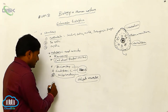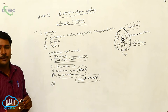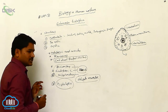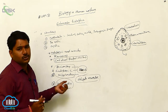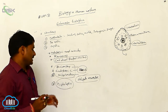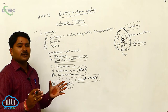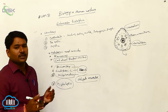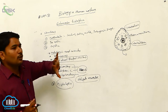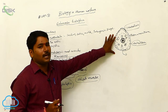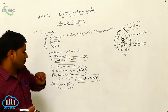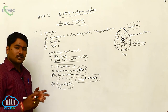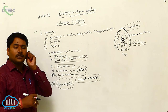The Entamoeba histolytica trophozoite produces an enzyme called histolysin. The name indicates: histo means tissue, lysin means damage. This enzyme damages the tissue, then it pierces the mucosa and sub-mucosa and enters the intestinal tissue. Locomotion is caused by the lobopodial type of pseudopodium.